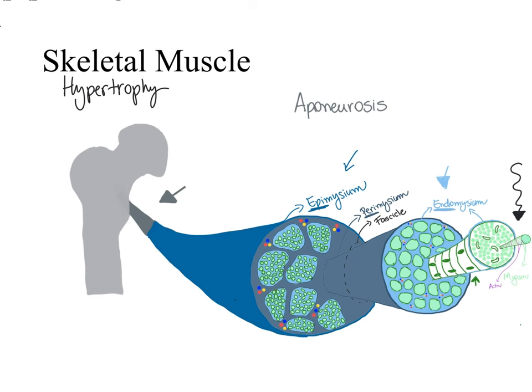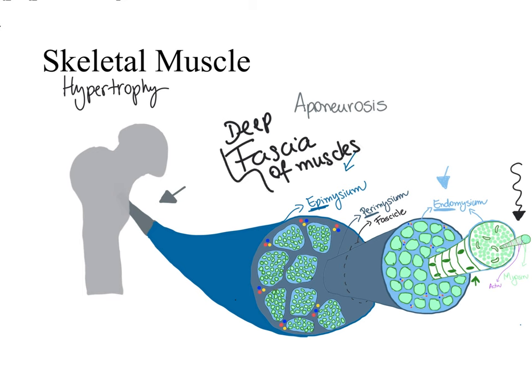So we have been talking about aponeurosis, tendons, epimysium, perimysium, and endomysium. What do they have in common? They are all connective tissue. Have you heard of fascia? Fascia is a connective tissue sheath. When this connective tissue sheath wraps around a group of muscles, we call it deep fascia, or very specifically, fascia of muscles. Fascia of muscles is made of dense, irregular connective tissue, and this sheath wrapping around a group of muscles provides support and protection to those muscles.